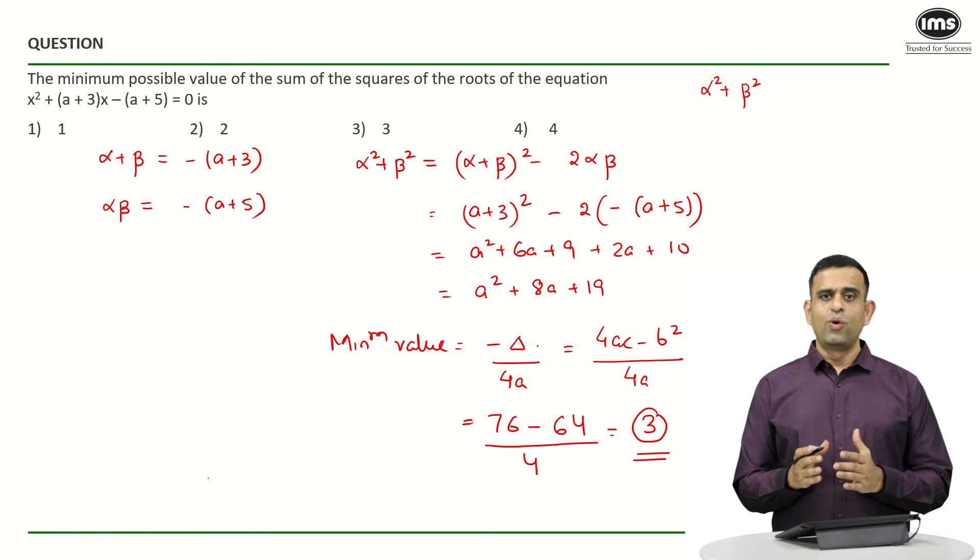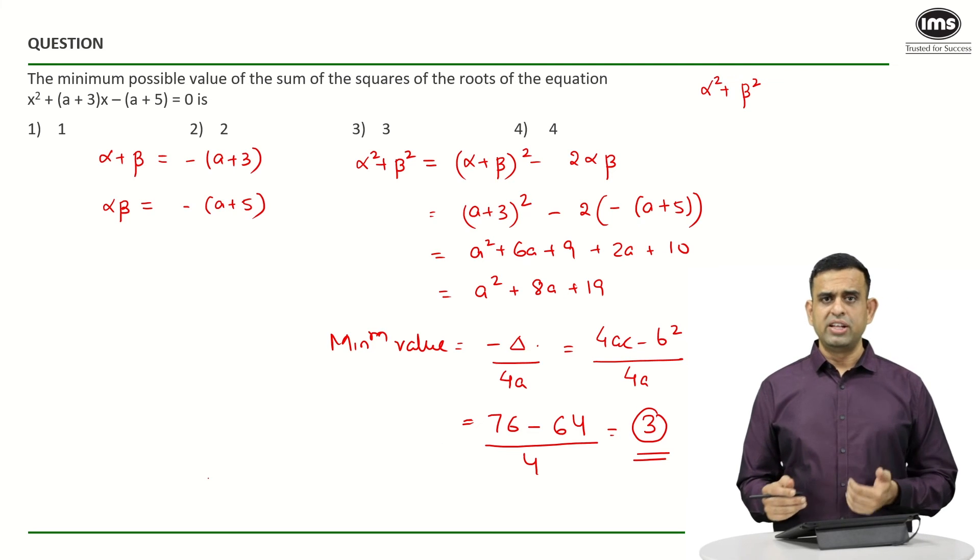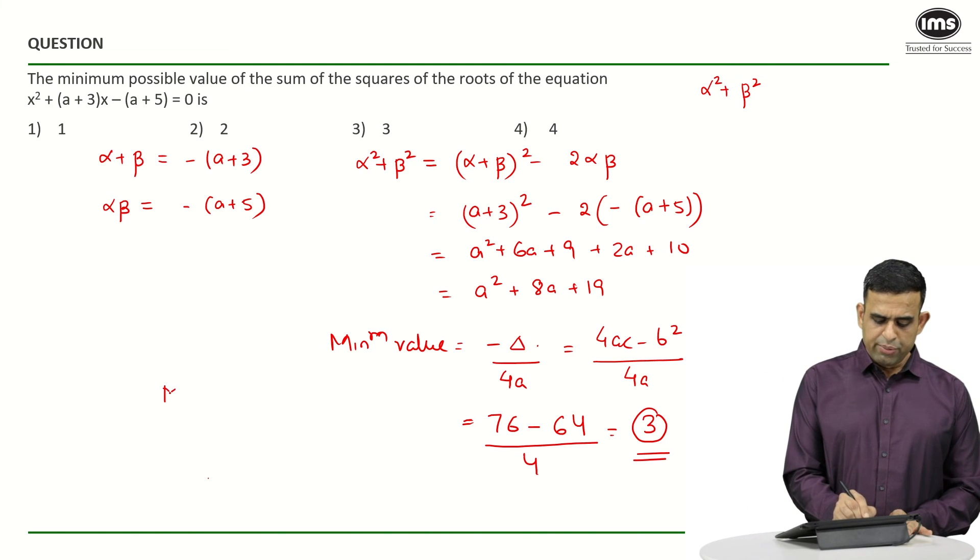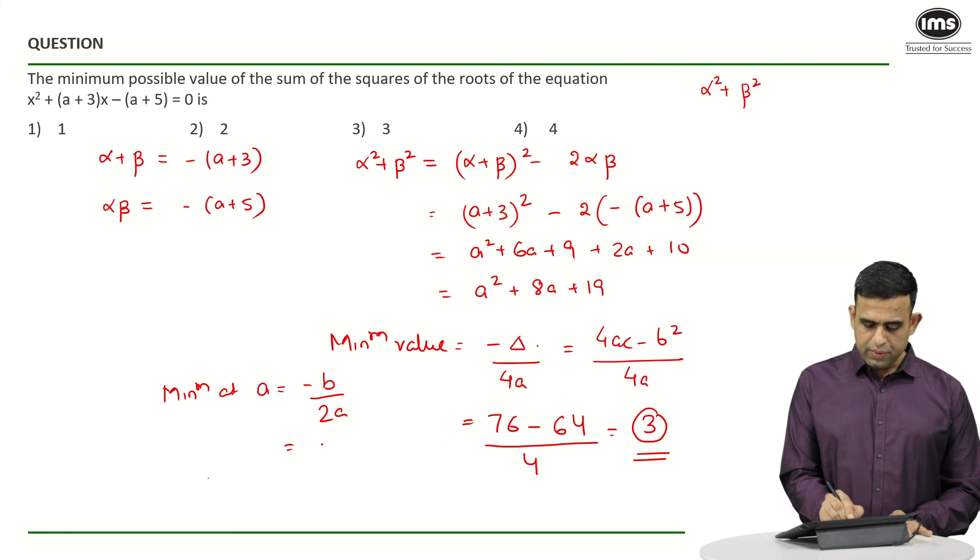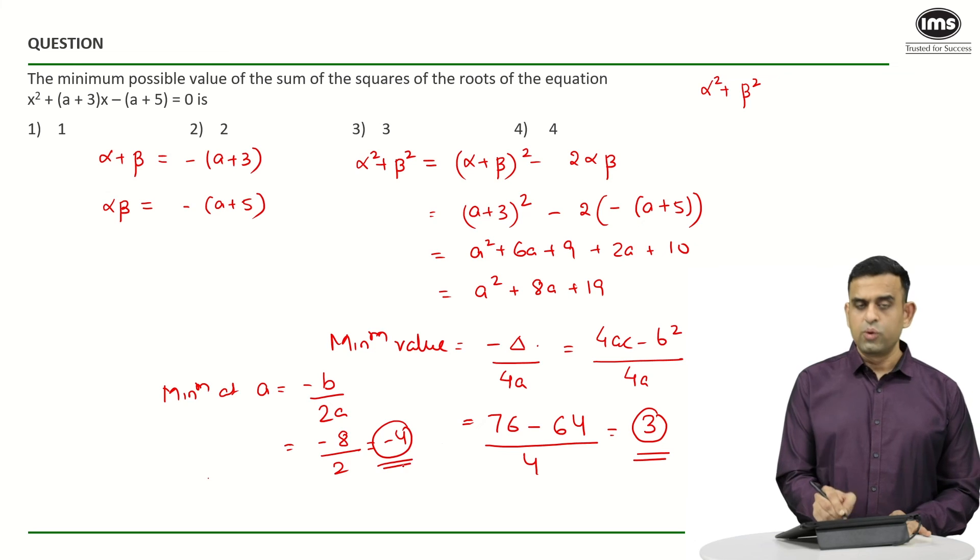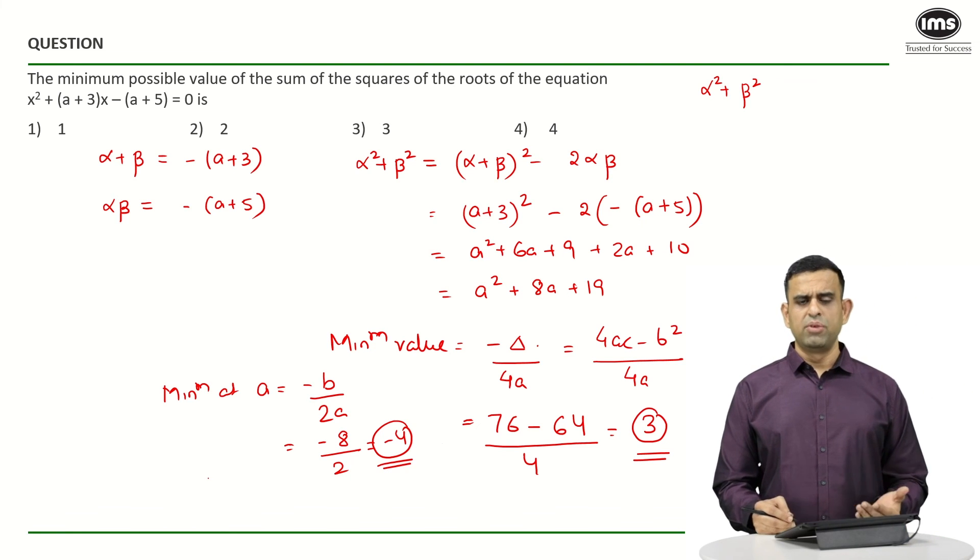Please note the value of x which is going to minimize the expression should be equal to, so minimum at, you can say a in this particular case, should be equal to -b/2a, you will get nothing but...